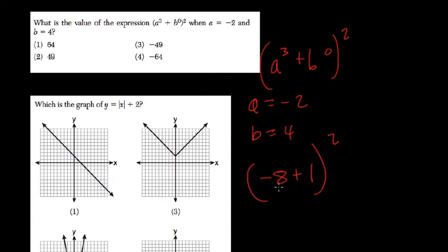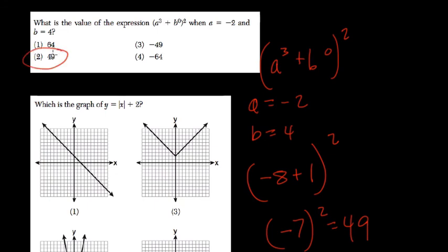Negative 8 plus 1 is negative 7. If we square that, we get 49, so our answer is 49.